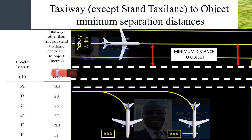Remember that for runway and taxiway separations, the measurement ranges from the centerline to the centerline of the other facility. When comparing parallel taxiways, the measurement starts from the centerline of one taxiway to the centerline of another taxiway. But for taxiway to object, where we are using a service road parallel to a taxiway, we measure from the centerline to the edge of the service road — not the centerline of the service road.